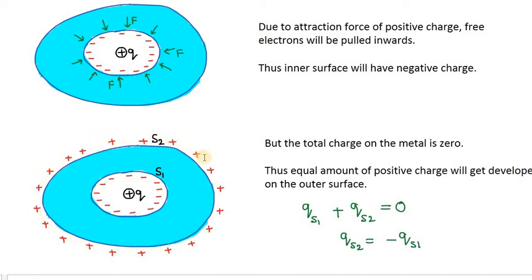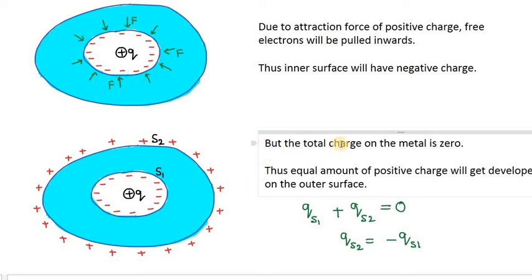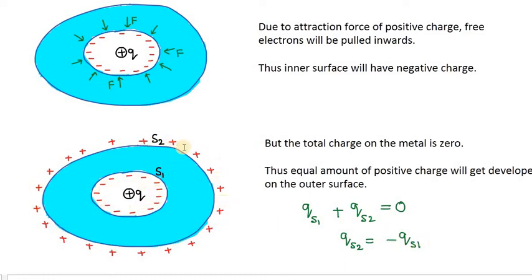The positive charge on the outer surface plus the negative charge on the inner surface must sum to zero. For example, if the charge on the inner surface is minus one microcoulomb, then the charge on the outer surface will be plus one microcoulomb, because the total charge on the conductor must be zero before and after. So the equal amount of positive charge gets developed on the outer surface. That means charge on surface S1 plus charge on surface S2 must equal zero, so the charge on S2 is the negative of the charge on S1.